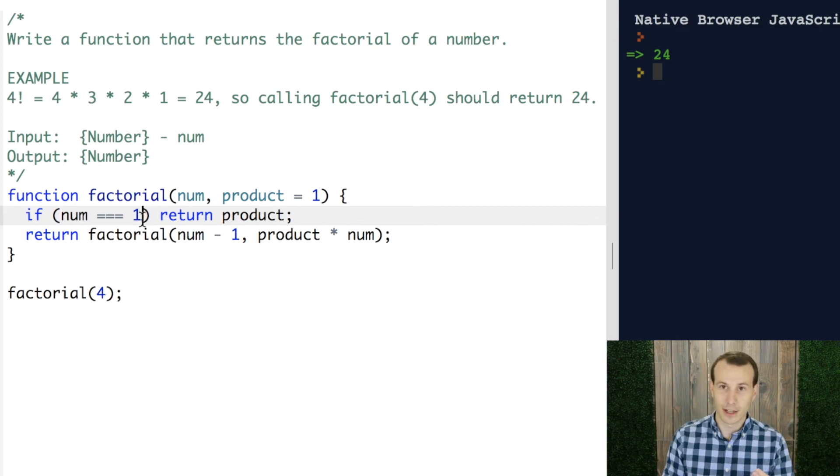One little tricky thing you might want to think about, well, what if the user puts in a negative number or a non-number, you can handle that, and you'll often see the factorial written with this num equals zero, in case the user inputs a zero, mathematically zero factorial is one, and this would give you that one.